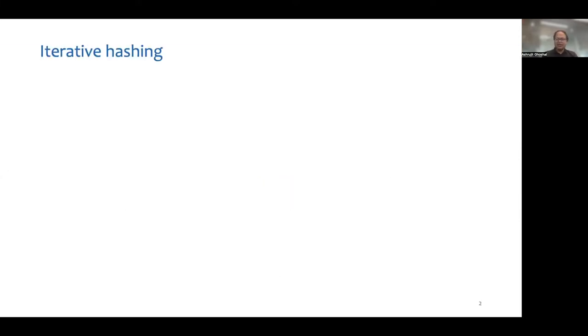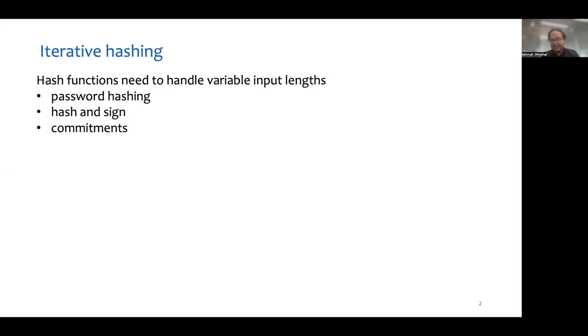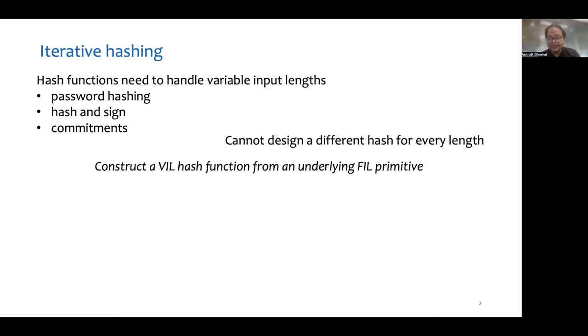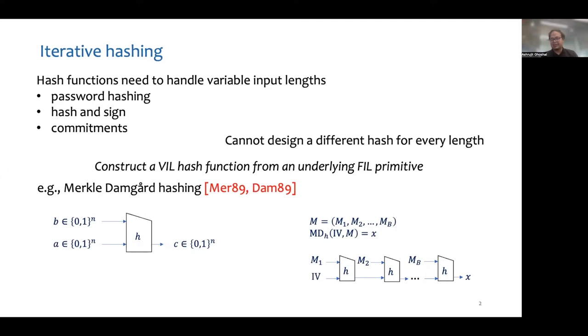Hash functions are one of the fundamental primitives of cryptography that have many different applications. Certain applications, like password hashing, require a hash function to handle different input lengths. However, it is infeasible to design a different hash function for every length. Hence, iterative hashing is used to construct variable input length hash functions using fixed input length primitives, the most popular example being the Merkle-Damgard construction.